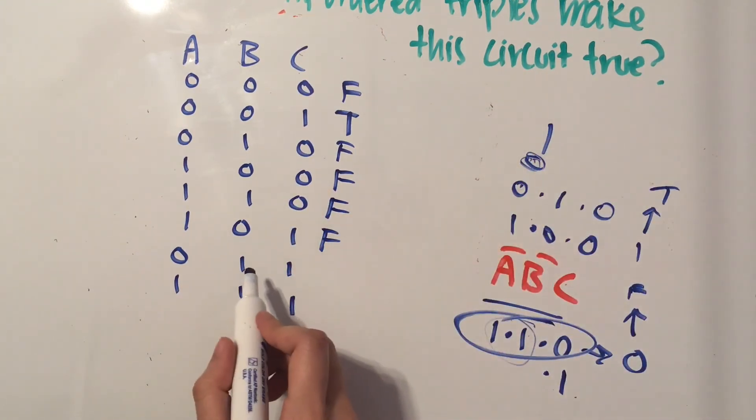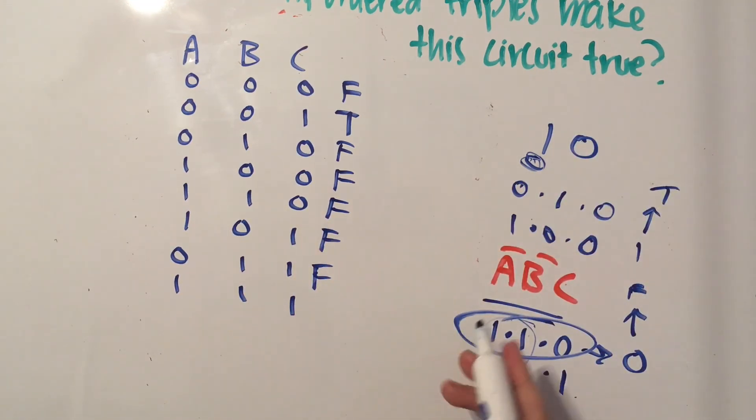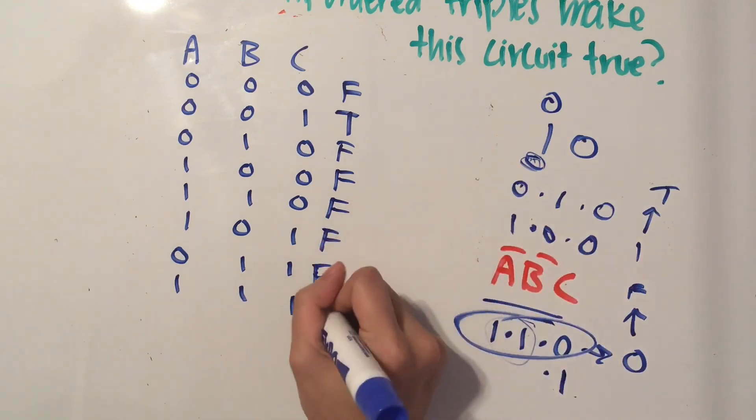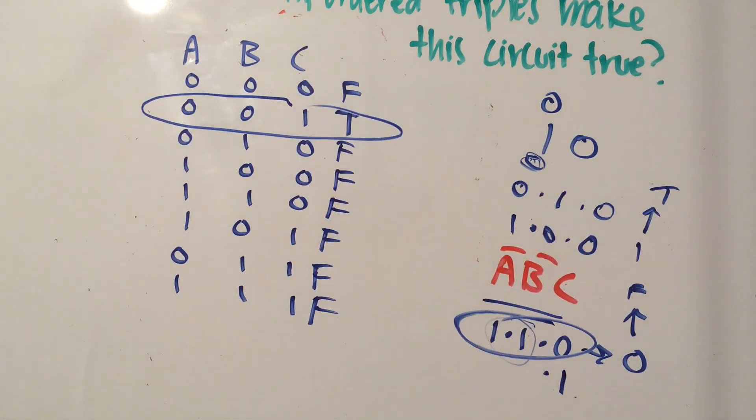NOT A is one, NOT B is zero, okay, I see a zero, so that's going to end up false. NOT A is zero, and that's false. And so this is the only ordered triple that makes our circuit true.